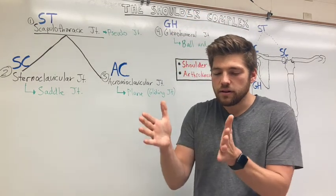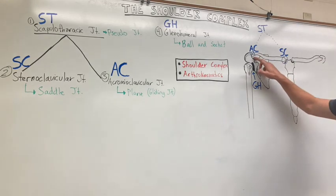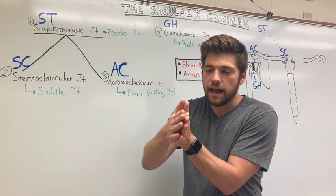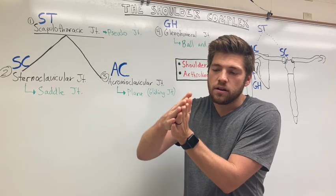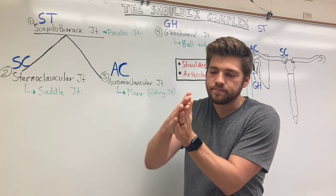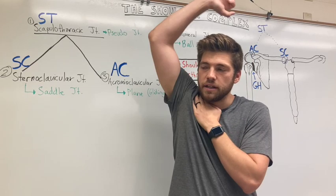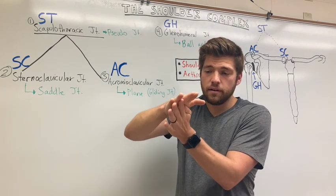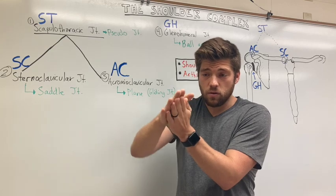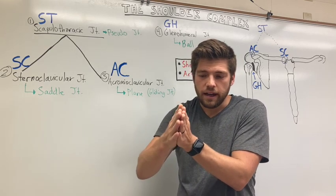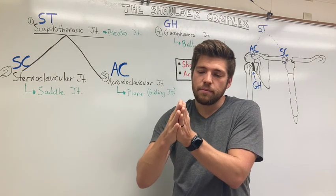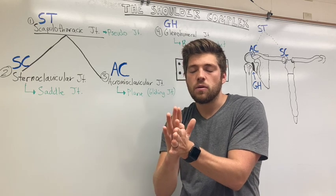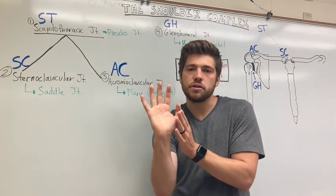At the AC joint, which is a plane joint — the ends are flat against each other. For upward rotation to get your arm above your head, it's going to roll and slide up. For downward rotation, it's going to roll and slide down. For internal rotation of the scapula, it's going to roll and slide forward. For external rotation, it's going to roll and slide backwards. For anterior or posterior tilt, it's just going to be a spin around the medial-lateral axis.